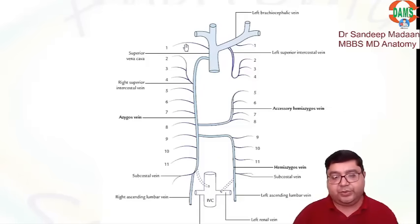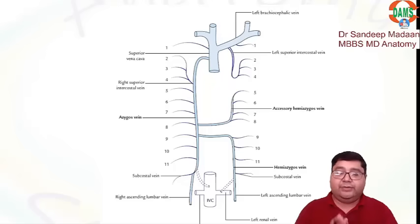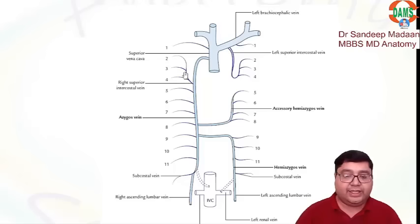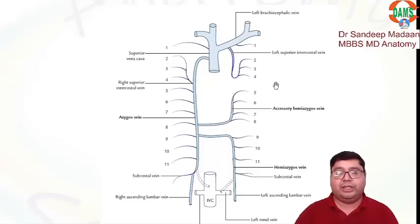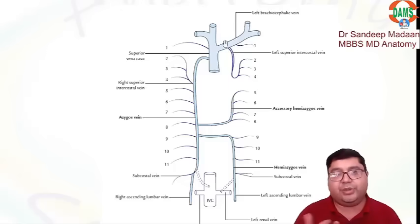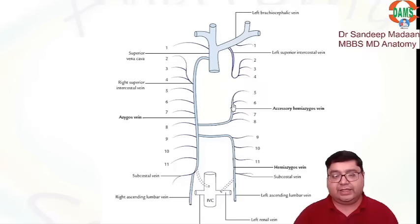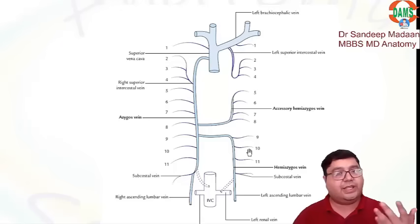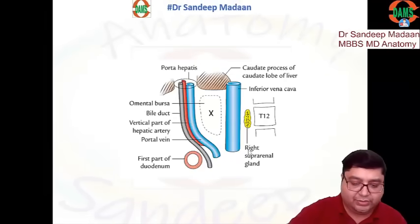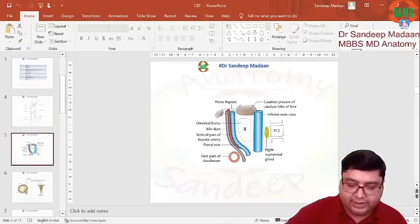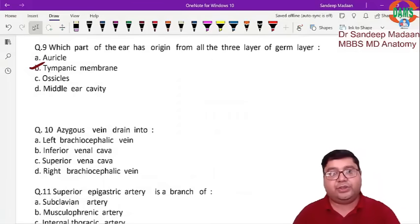The first posterior intercostal vein on both sides drains into the brachiocephalic. The superior intercostal vein is formed by the merger of the second, third, and fourth veins on both sides, but the right side drains into the azygous and the left side drains into the brachiocephalic. On the left side there are three areas of drainage: brachiocephalic, accessory hemi-azygous, and hemi-azygous — with 12 veins divided by 3, giving 4 each. The answer to this question is the superior vena cava.